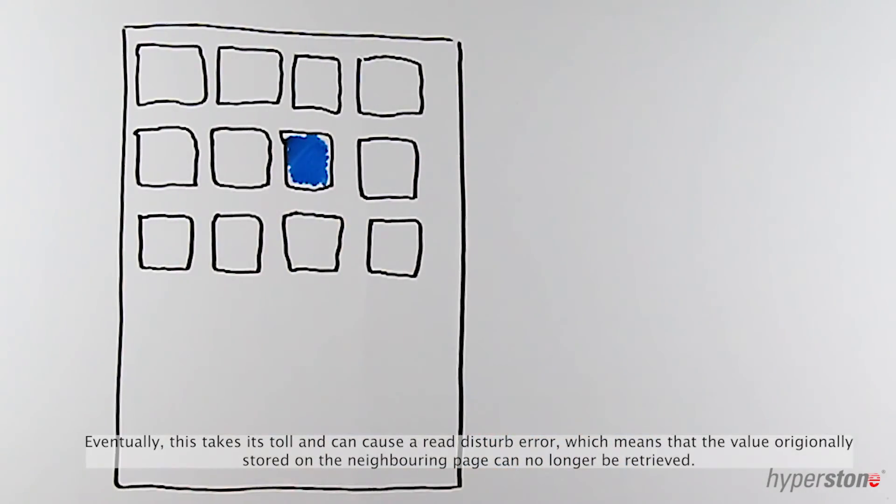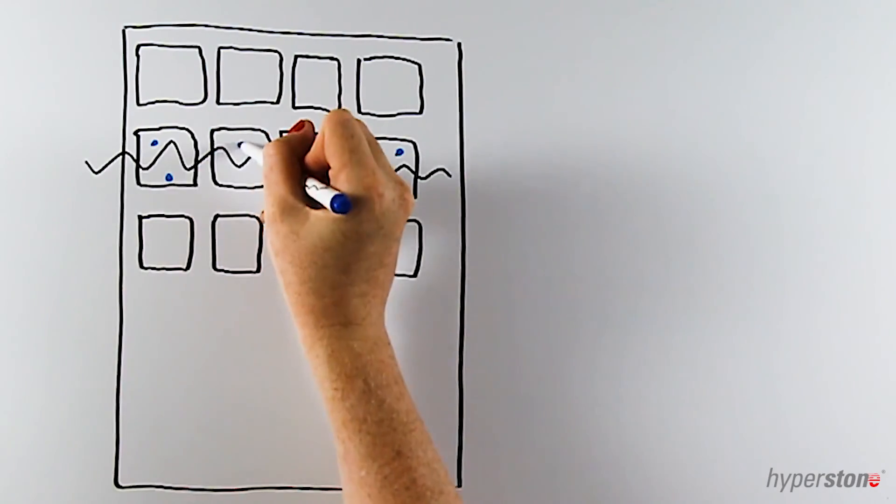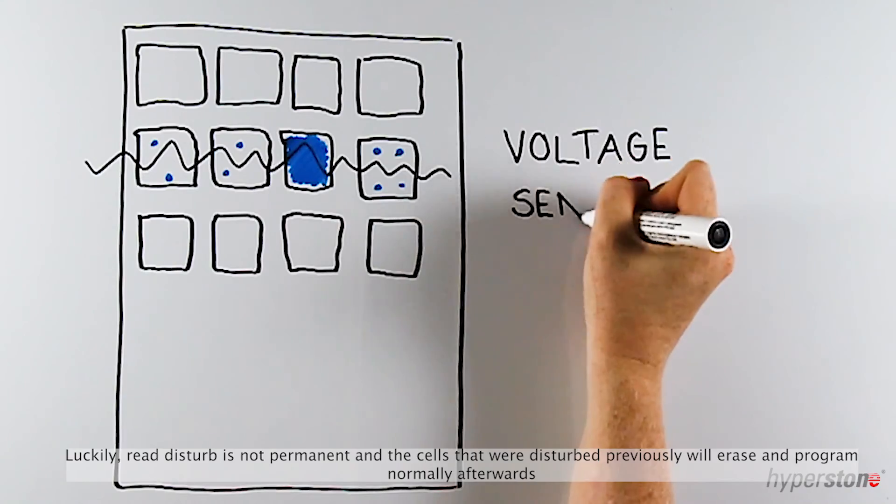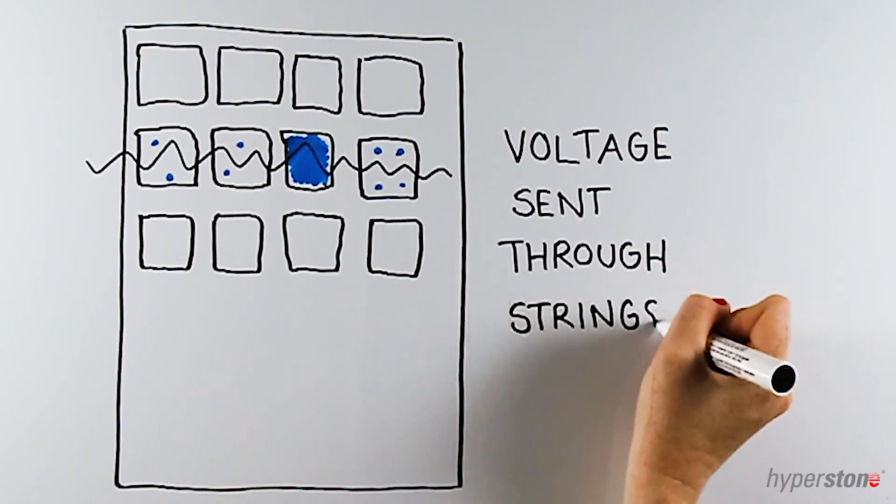Eventually this takes its toll and can cause a read disturb error, which means that the value originally stored on the neighboring cells can no longer be retrieved. Luckily, read disturb is not permanent and the cells that were disturbed previously will erase and program normally afterwards.